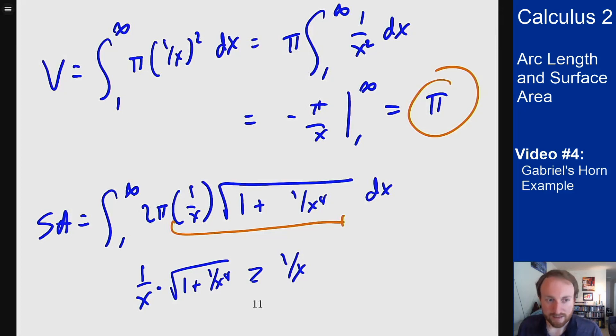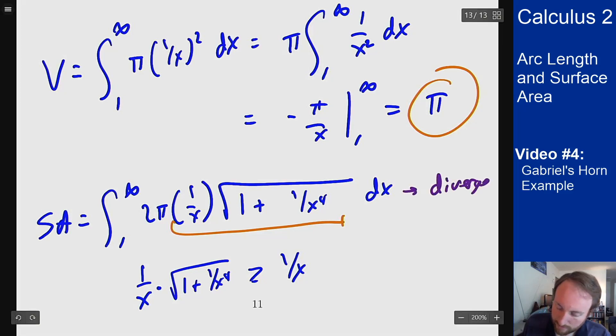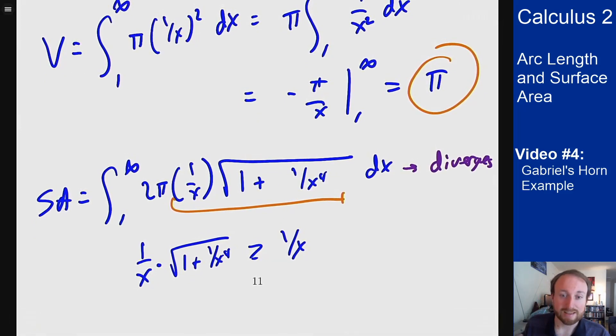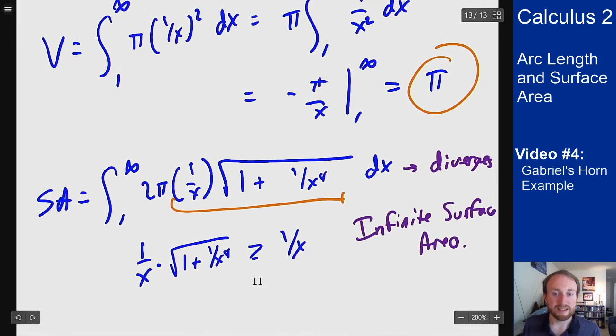This function is bigger than one over x, but we know the integral of one over x diverges, which means this integral here also diverges. So in effect, this solid has infinite surface area but it contains a finite volume.